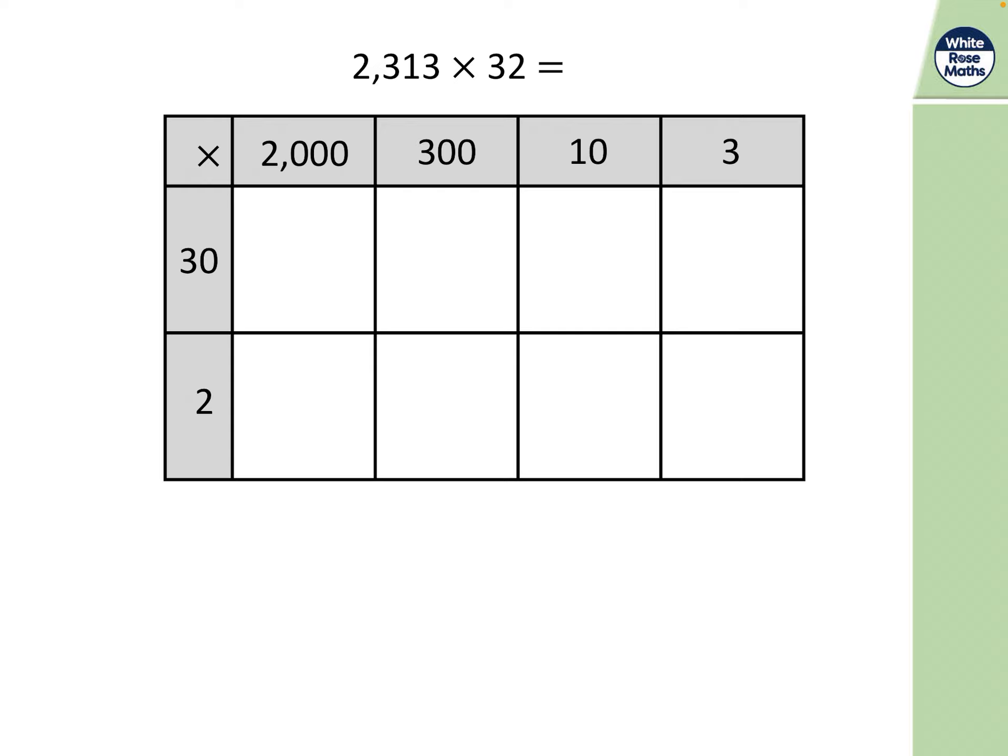Okay so here is an area model. Let's give it a go, pause it, work it out. So I'm going to do my 30 times three thousand is of course sixty thousand. Thirty times two is sixty, thirty times two thousand must be sixty thousand. We're going to do thirty times three hundred. Thirty times three is of course ninety, so three hundred times thirty is nine thousand.